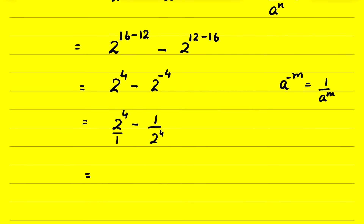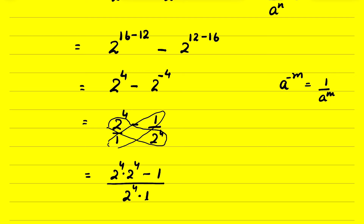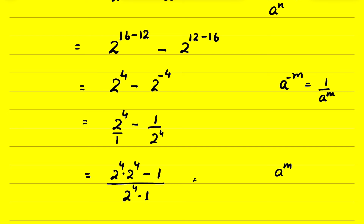Now we can do cross multiplication using the butterfly method. This gives 2 raised to the power 4 times 2 raised to the power 4, minus 1, upon 2 raised to the power 4 times 1. We multiplied the numerators and denominators accordingly. This again uses the identity a raised to the power m times a raised to the power n equals a raised to the power m plus n.